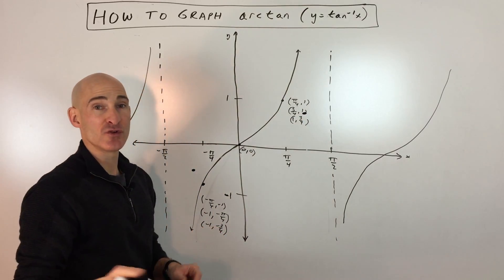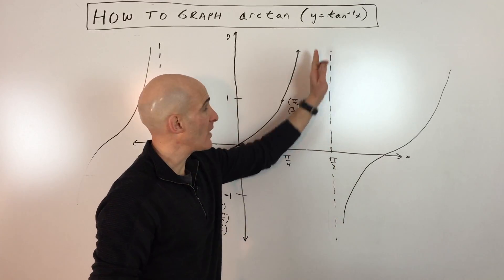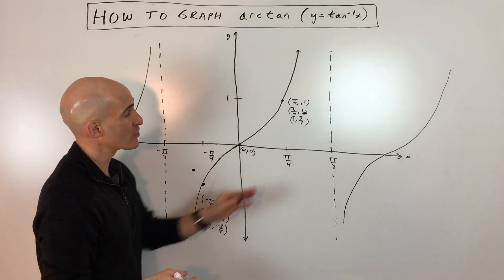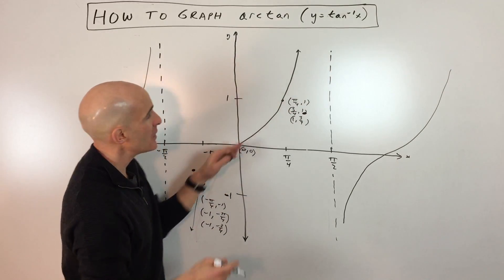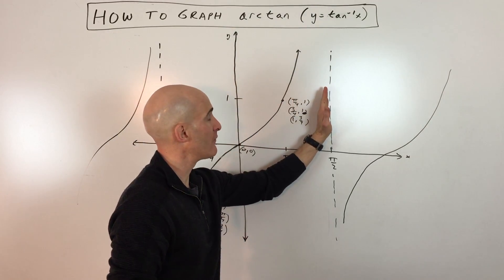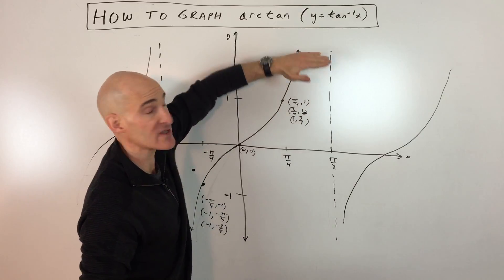Now, the next thing I'm going to do is take these vertical asymptotes, and when you reflect these vertical asymptotes over the line y equals x, this 45-degree line, what you end up getting is instead of a vertical line, you end up getting a horizontal line.